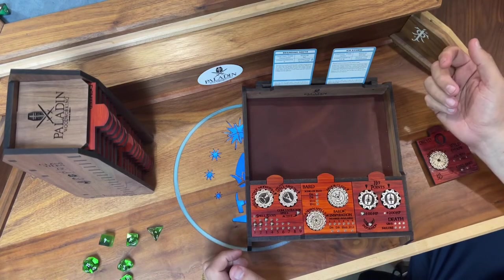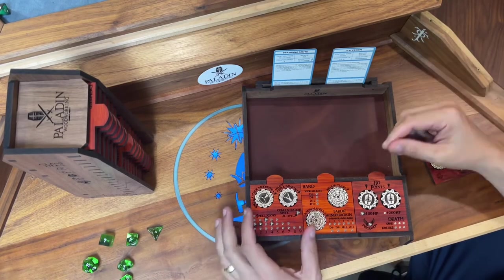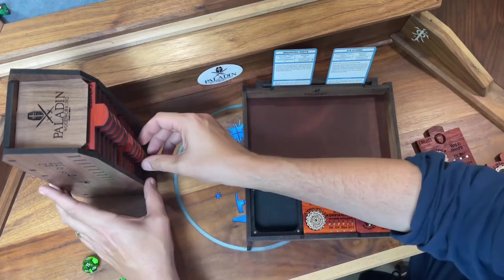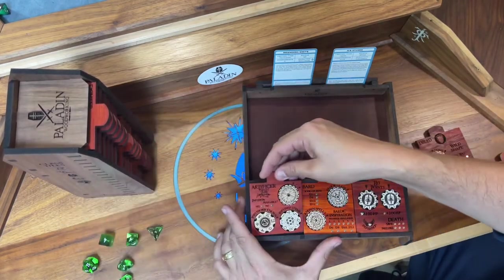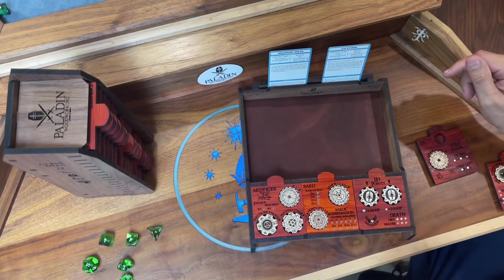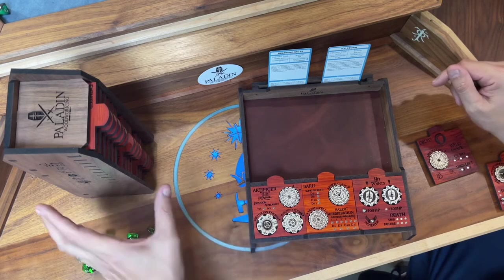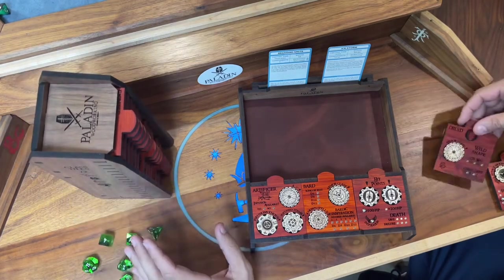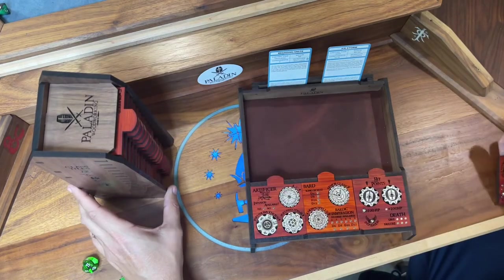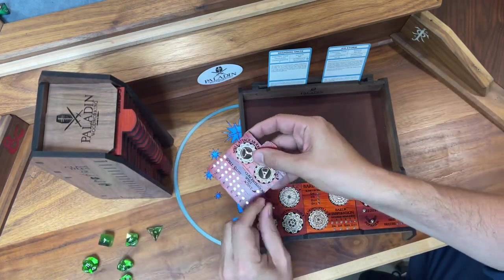You can even play multi-classed. So let's say you have a barbarian/artificer—interesting character. You've got the barbarian abilities here, the artificer here, and then your hit points here, ready to go. The tile tower holds all of these magnetically, so they snap into place as you put them in.